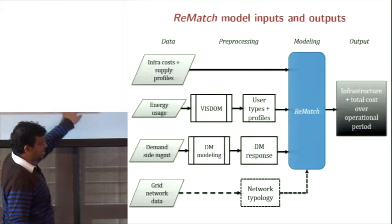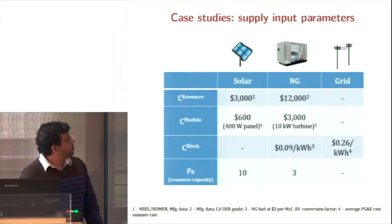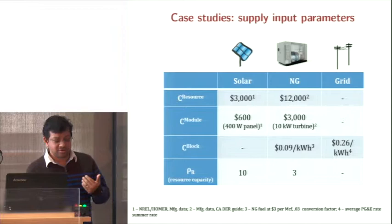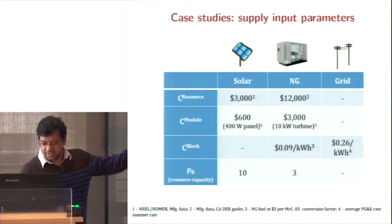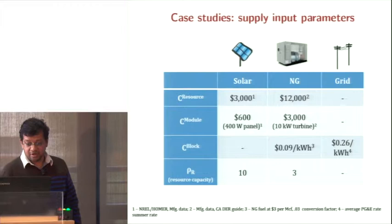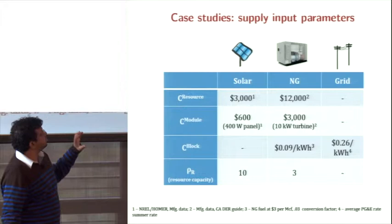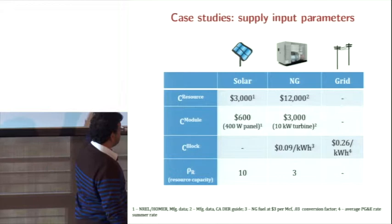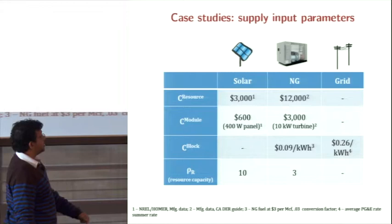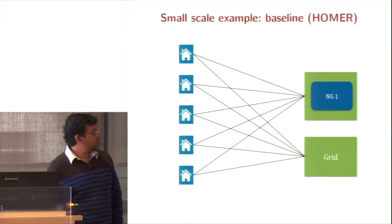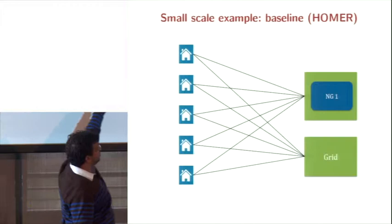Let me show an exercise planning for six homes and then for around 20,000 homes. Using numbers taken from Homer and various documents, we allow construction of solar panels, a natural gas generator, about 10% demand side management, and assume a grid electricity rate of 26 cents per kilowatt-hour. Running this through Homer, we found a system that has a single natural gas generator, with all homes equally drawing from it and from the grid.